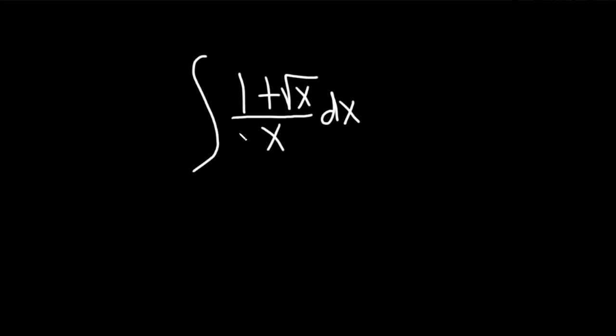In this problem we're going to integrate 1 plus the square root of x divided by x with respect to x. To do this we're going to start by breaking it up.